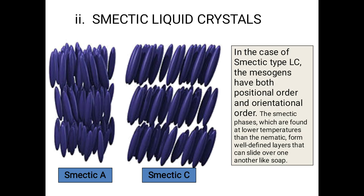Smectic liquid crystals are further classified into smectic A, smectic B, and smectic C. In the smectic phase, molecules are cigar-shaped and arranged in layers. In this mesophase, the molecules possess a small amount of both positional order and orientational order. The molecules tend to point along the director and arrange themselves layer by layer in regularly spaced layers. The classification into smectic A and smectic C depends upon the orientation of the director relative to the layers.